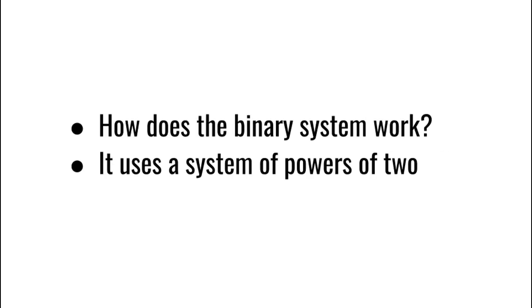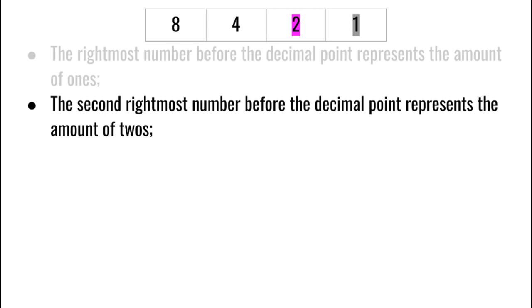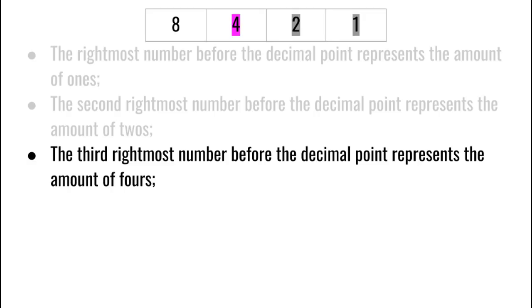It uses a system of powers of 2. The rightmost number before the decimal point represents the amount of ones, the second rightmost number represents the amount of twos, and the third rightmost number represents the amount of fours.